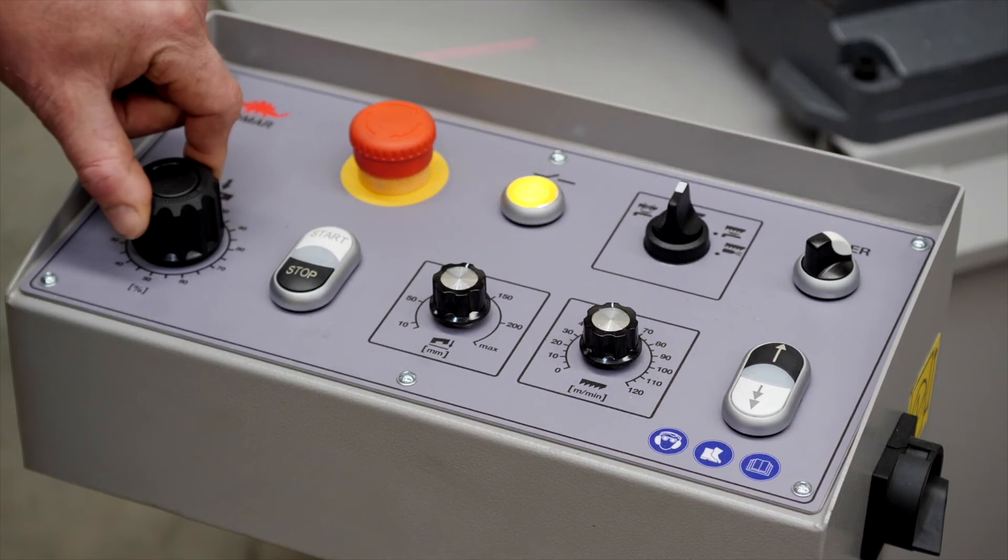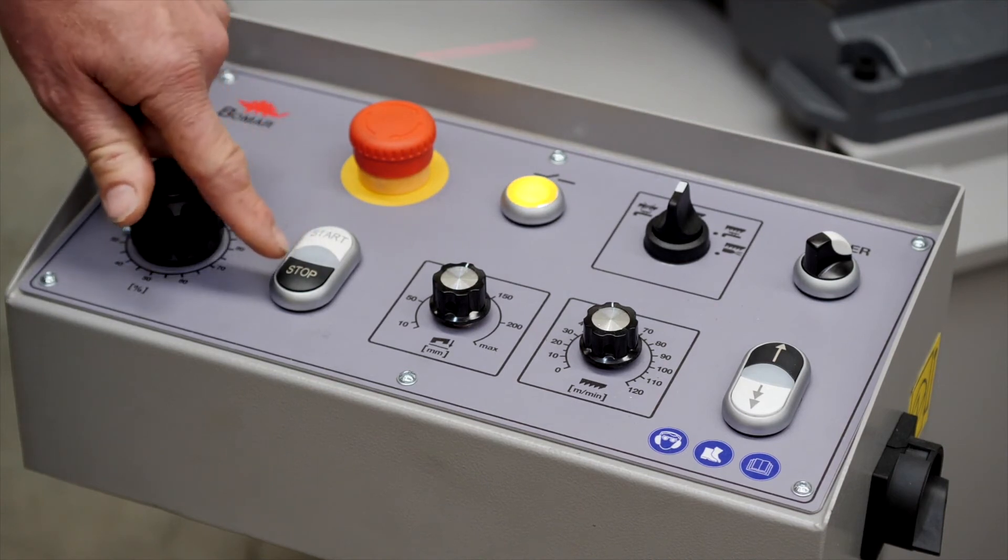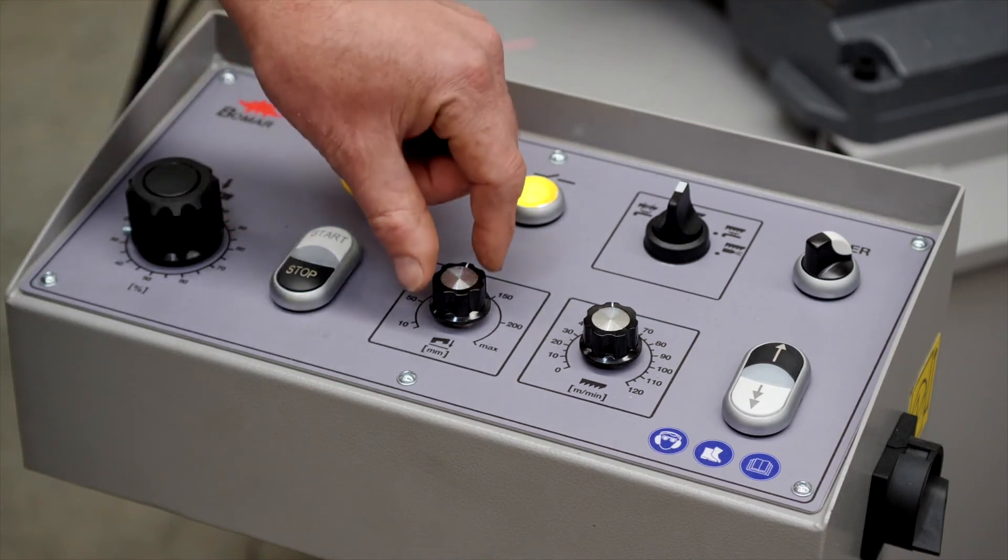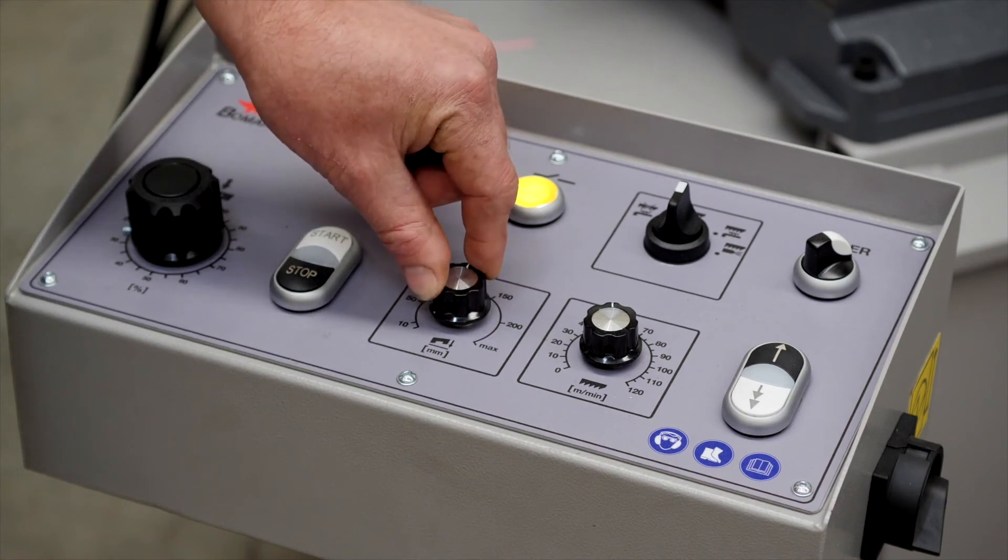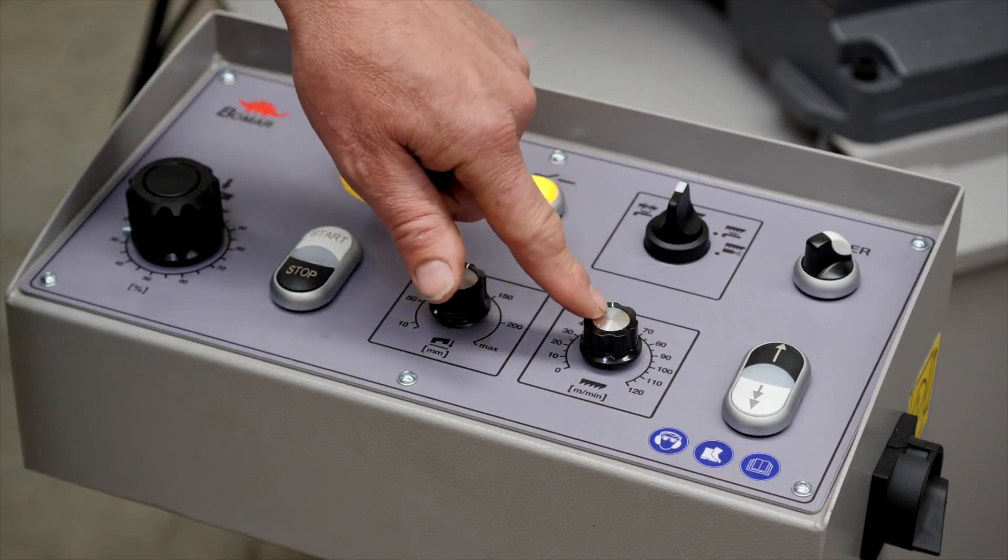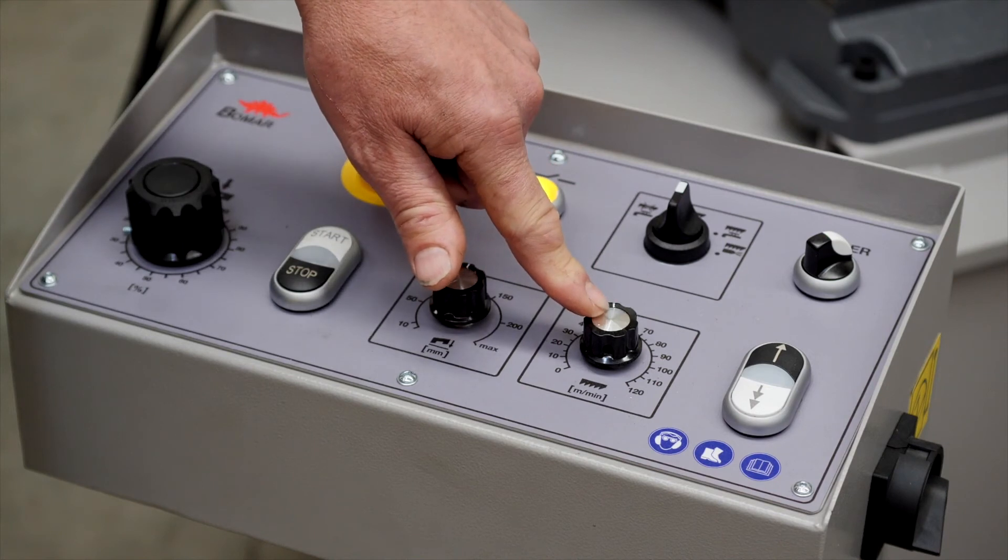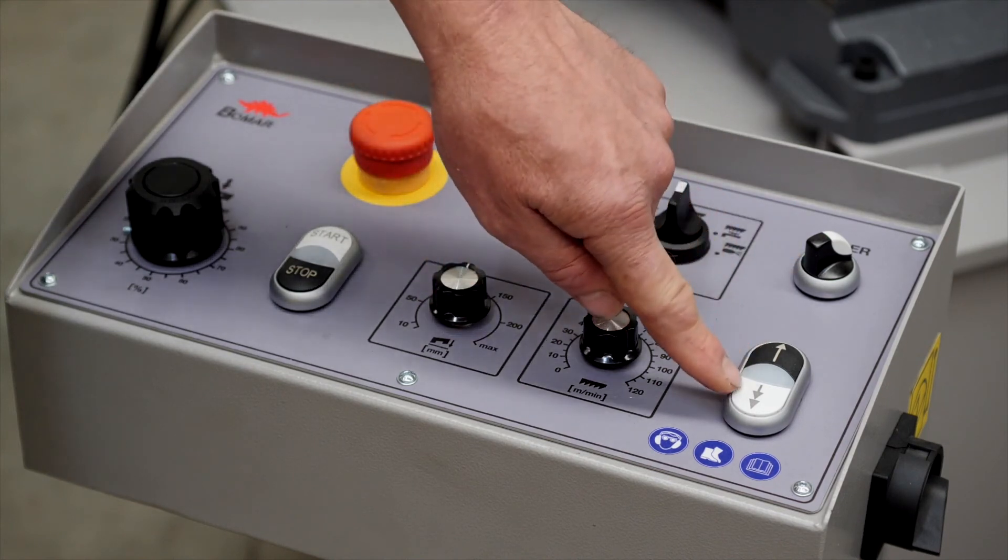Adjust the bow cutting feed rate. Start and stop the cycle. Adjust the bow return height to the height of the material. Adjust the blade rotation speed. Manually lift or lower the saw bow.